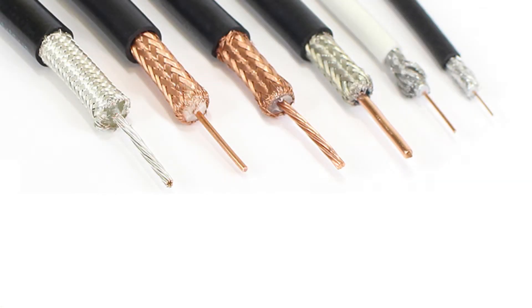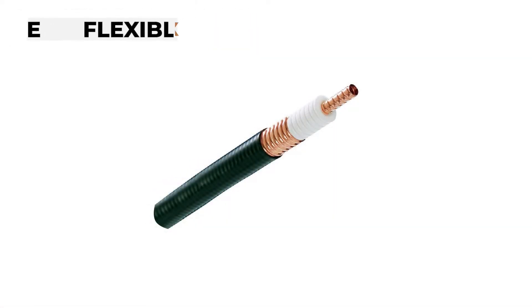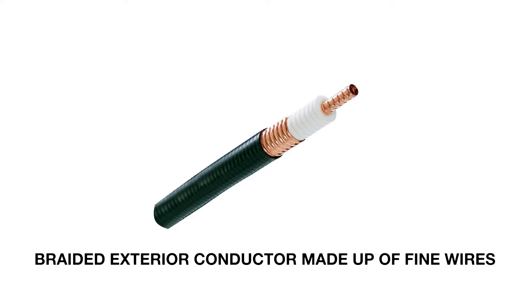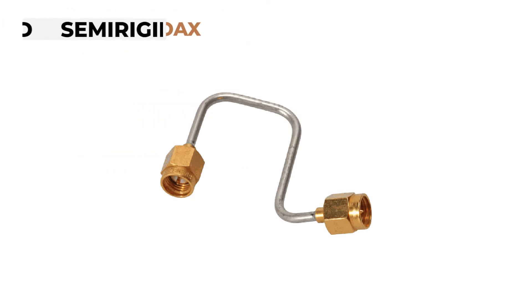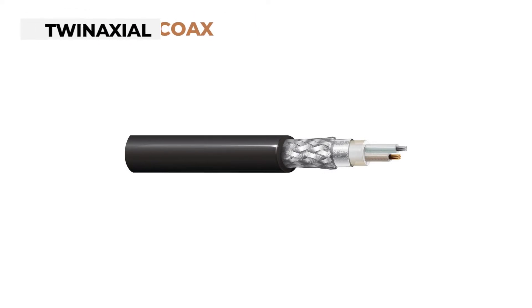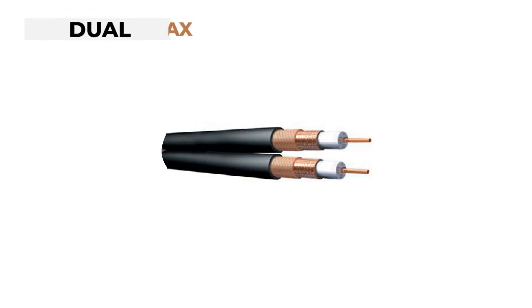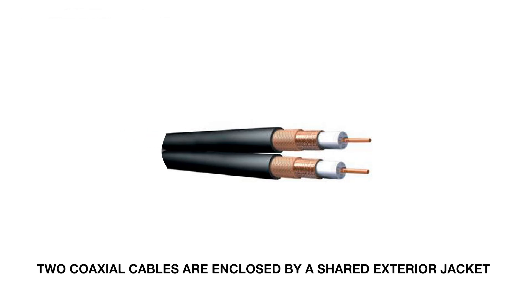Now, let's look at the different types of coaxial cables on the market. There are various different types available according to different criteria. Based on construction: first, flexible coax, which is regarded as a common type of coaxial cable — every flexible coax cable contains a braided exterior conductor made of fine wires, and the braid is what offers adequate flexibility to the cable. Second, semi-rigid coax — the structure shows a durable, tubular metallic exterior conductor identical to a pipe. Third, twin-axial coaxial cable, also known as twinax — these cables have two exterior conductors separated by a dielectric layer. Fourth, duo-coaxial cable — in these cables, two separate coaxial cables are enclosed by a shared exterior jacket.